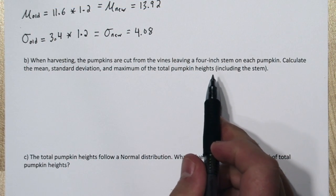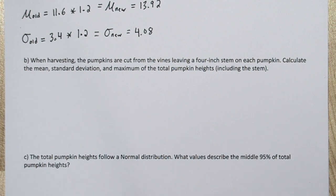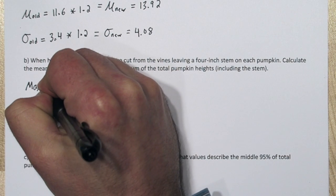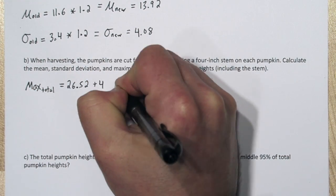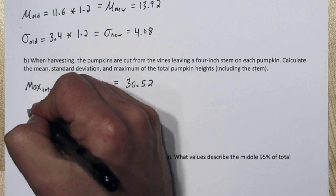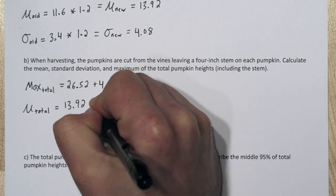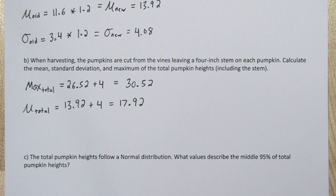Our next transformation is adding 4 to all the pumpkins to get their total height. So the maximum is going to be an additional 4 inches, that brings us to 30.52. And if all the pumpkins get 4 inches added to them, our mean will also increase by 4 to 17.92.